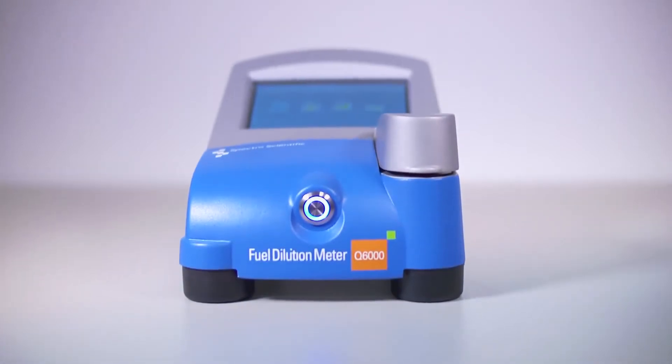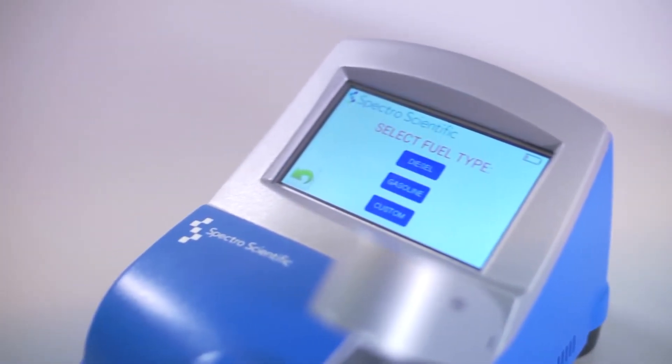The Q6000 is the next generation fuel dilution meter. The technology was originally developed in conjunction with the US Navy many years ago which focused on a sonar acoustic wave sensor as a quick and easy way to measure excess fuel dilution in crankcase engine oils in the field.